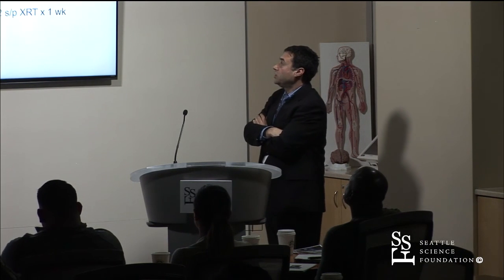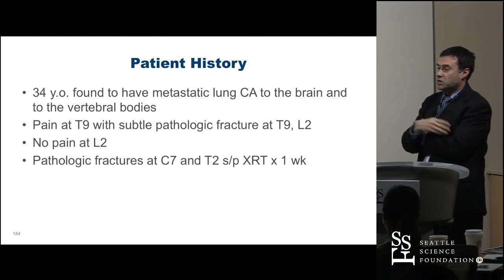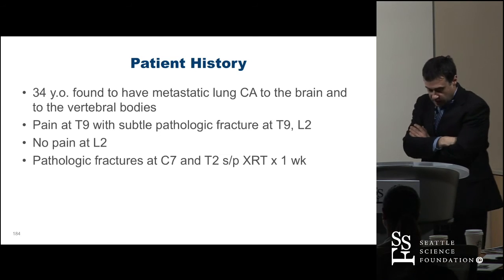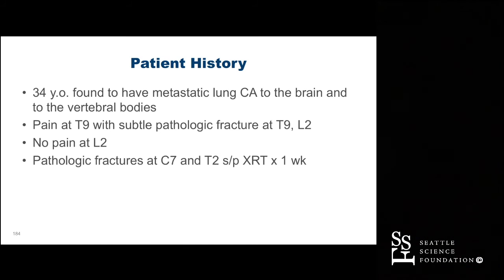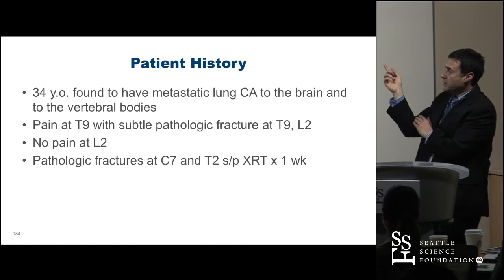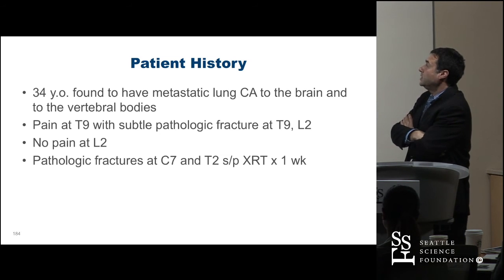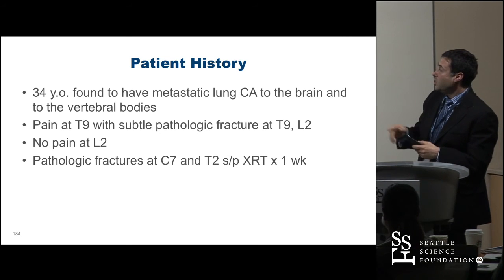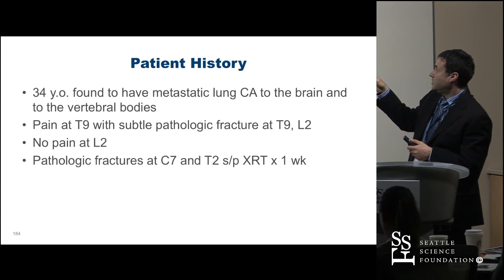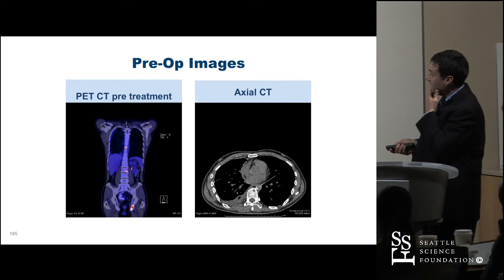A 34-year-old graduate student at USC found to have metastatic lung cancer to the brain — that was his presenting symptom. He is a non-smoker. He later developed pain at T9, also had a vertebral body lesion at L2 but no pain there. The pain was really at T9, with a very subtle pathologic compression fracture. He had pathologic fractures at C7 and T2 treated with radiation therapy; T9 was not treated and came to us.